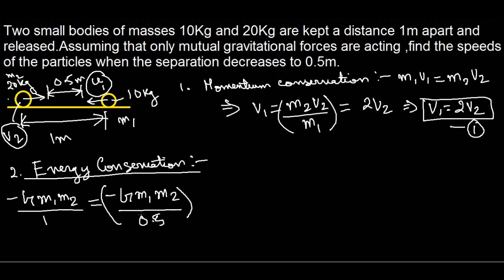The potential energy of the system has become this one, the denominator is 0.5 because the separation is now 0.5. But here two things which we need to remember: the kinetic energy of particle 1 and the kinetic energy of particle 2.